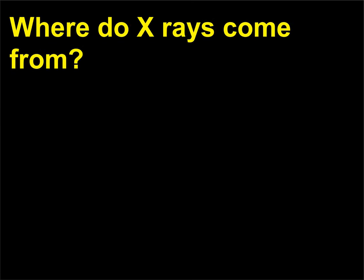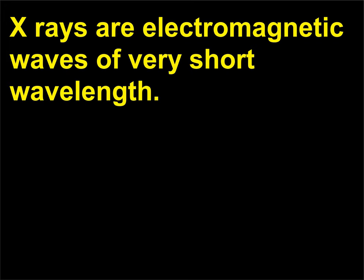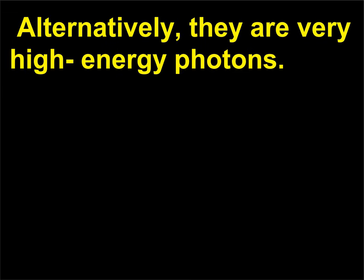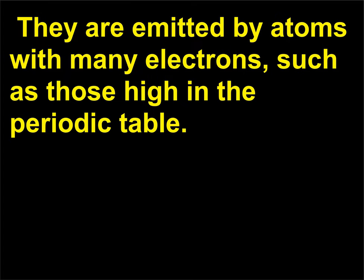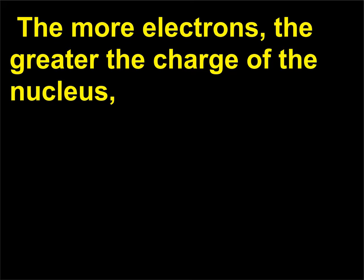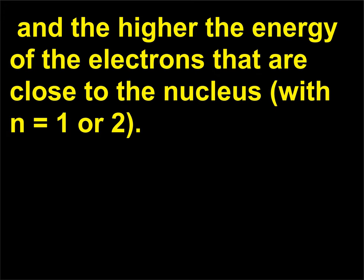Where do X-rays come from? X-rays are electromagnetic waves of very short wavelength — alternatively, they are very high-energy photons. They are emitted by atoms with many electrons, such as those high in the periodic table. The more electrons, the greater the charge of the nucleus, and the higher the energy of the electrons that are close to the nucleus, with n = 1 or 2.